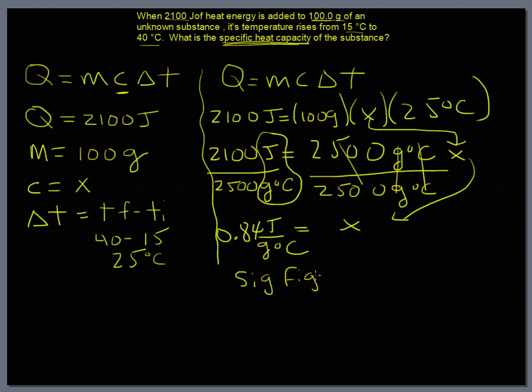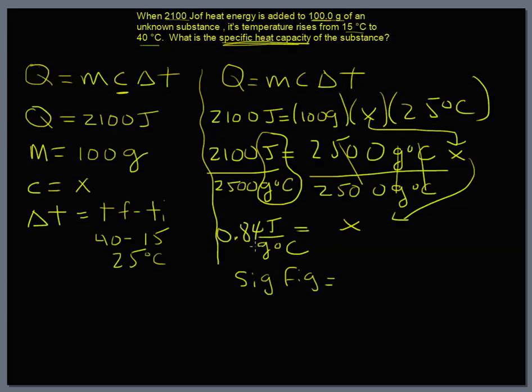And that would be, we're at 0.8, this is a 4, and of course we're going to look to our 8 and that, of course, 4 is less than 5. So we would say our unknown substance using the proper number of significant digits is 0.8 joules per grams degrees Celsius.